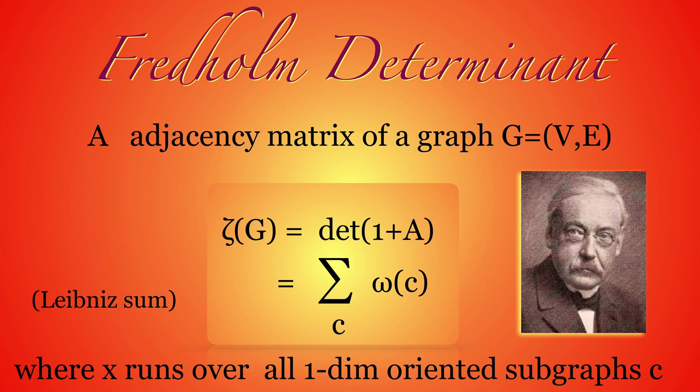When we say Fredholm determinant of a graph, we mean the Fredholm determinant of its adjacency matrix A. This is the determinant of the identity matrix plus A. The Leibniz sum consists of all admissible permutations of vertices in the graph. It is a path integral summing over all one-dimensional oriented subgraphs of G.